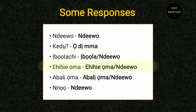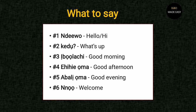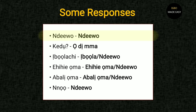For ehihioma, the response is ehihioma, or you can also say ndewo. For abalioma, the response is still abalioma, or you can simply say ndewo. When you are using ndewo as a response to ibolachi, ehihioma, abalioma, or nno, it doesn't mean hi — rather you are saying thank you, something like 'you're welcome,' and all of that.